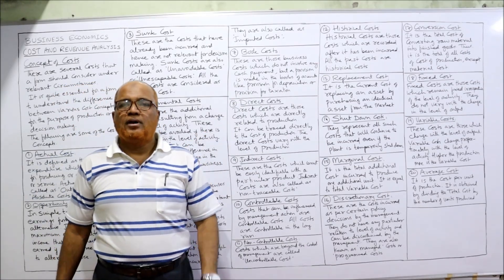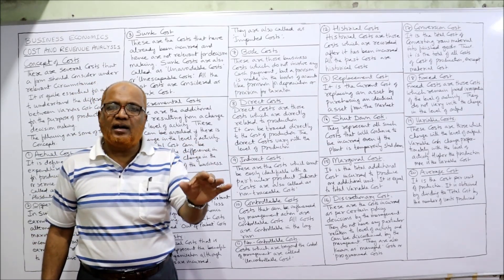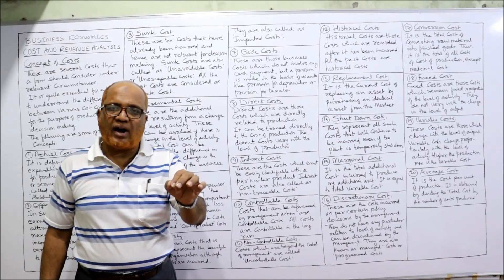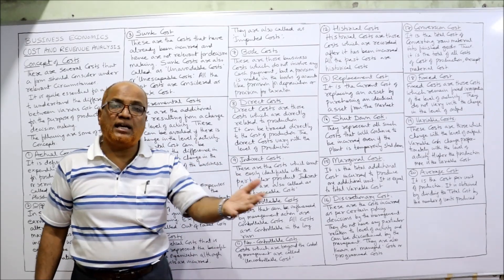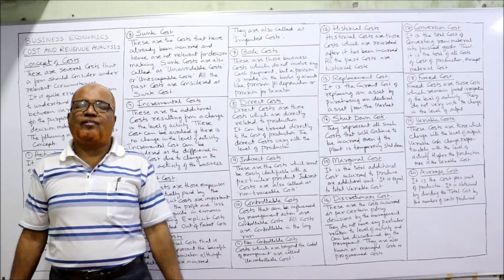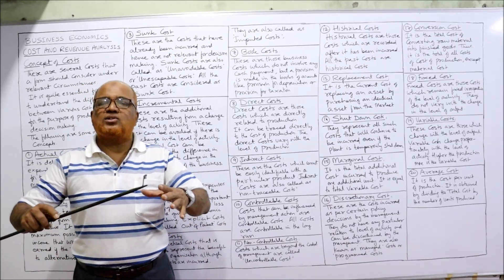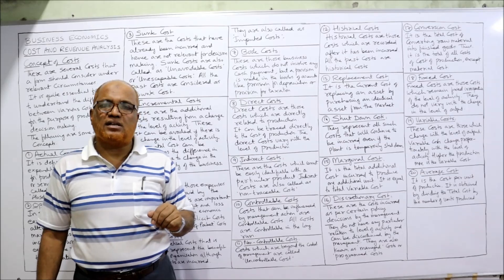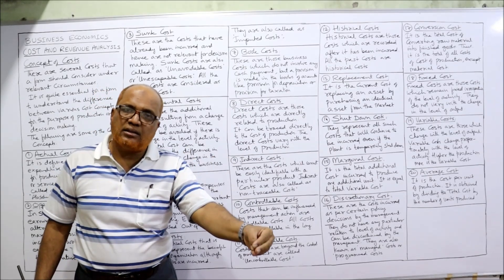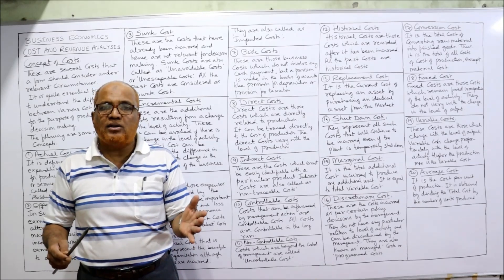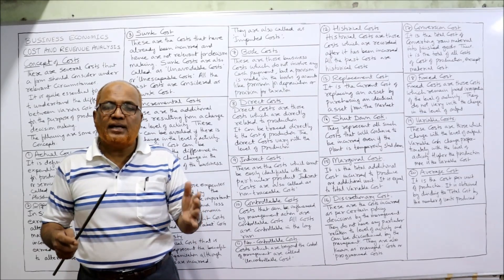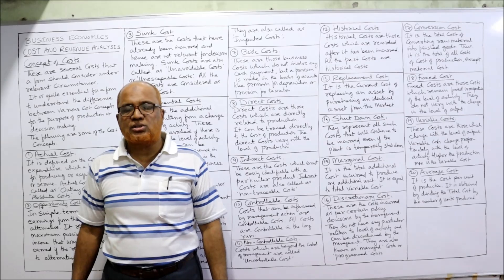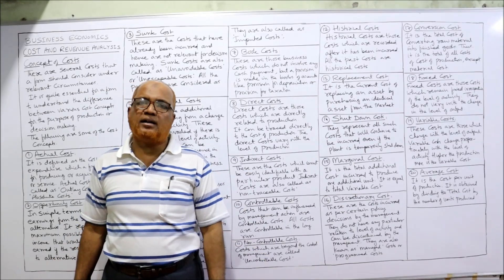Next is direct cost — the cost which is specifically incurred in making the product and which can be identified in the finished product. For example, in the case of a furniture manufacturer making a sofa set, the expenditure on raw material and the labour charges paid in making that sofa set are direct expenditures — we can see them in the finished product. The best examples of direct cost are material cost and direct labour.